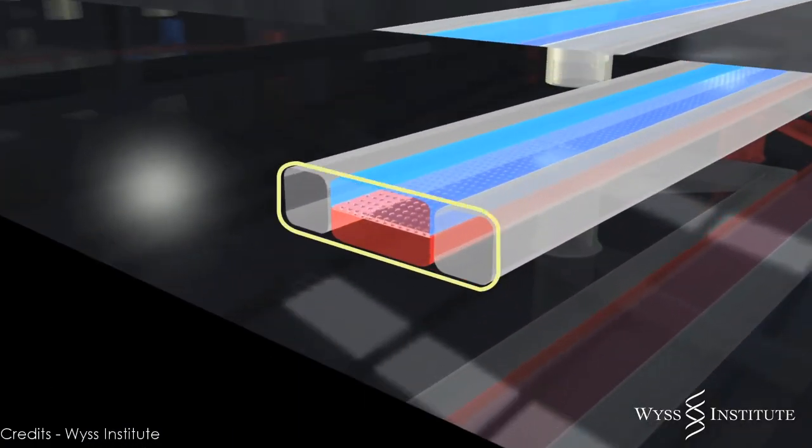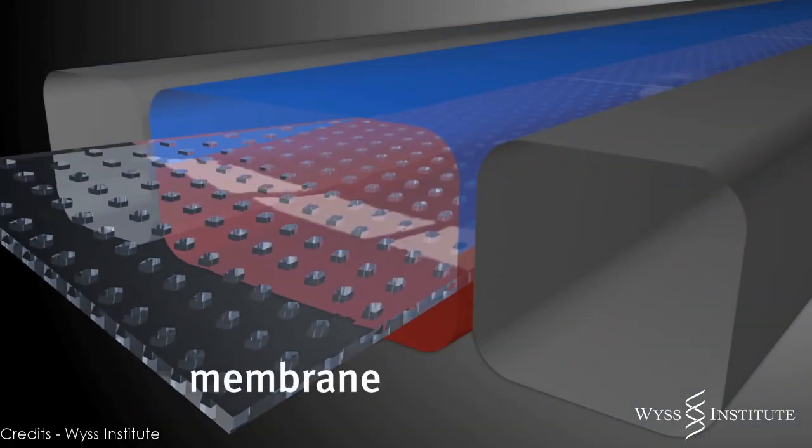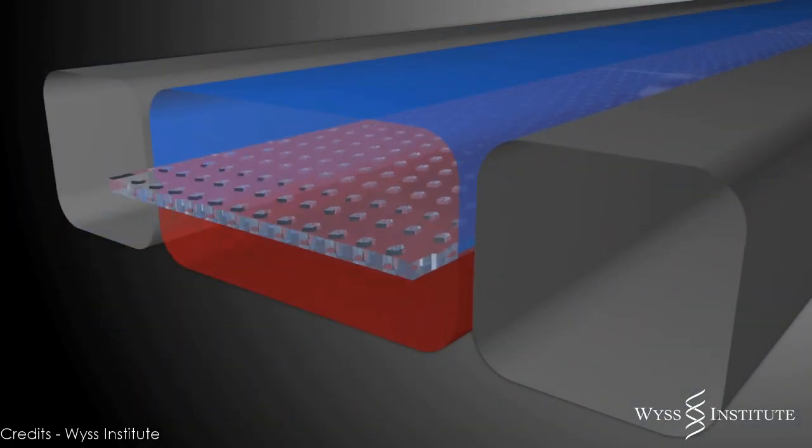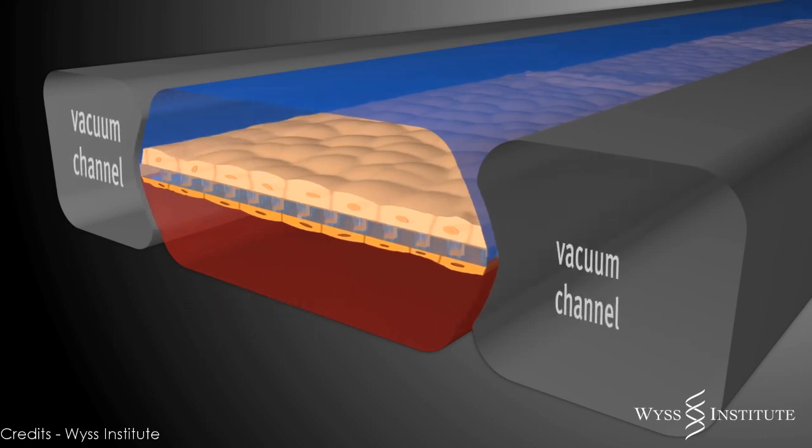There are three fluidic channels. A porous, flexible membrane separates two channels at the center of the device. The opposite sides of the membrane are lined by human lung and capillary blood vessel cells. And we can then apply mechanical forces to the chip that stretch and contract the membrane so the cells experience the same mechanical forces that they did when we breathe.